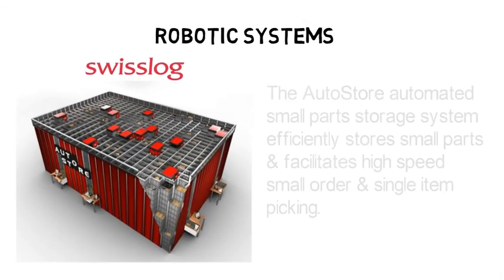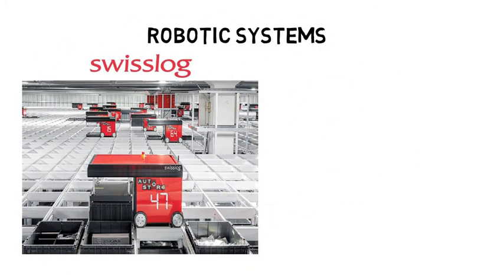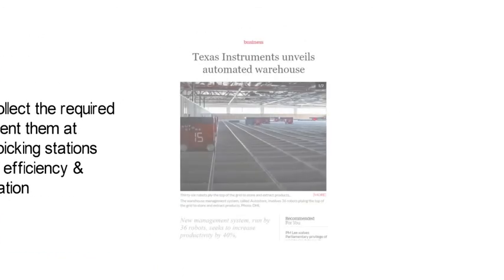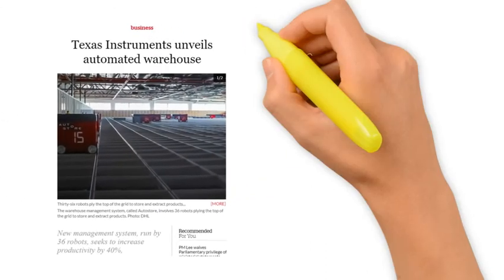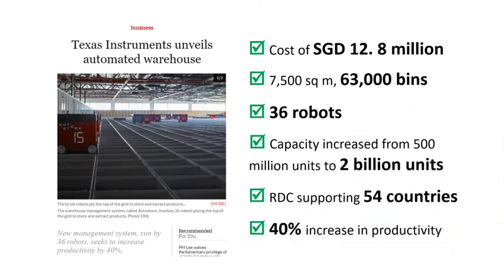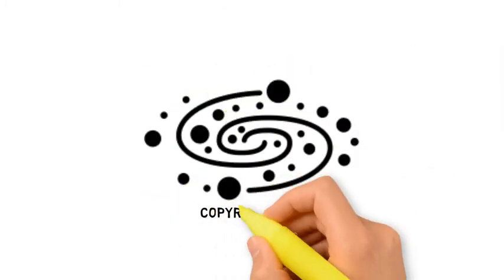The AutoStore is a fully automated storage system designed to efficiently store small parts and facilitate high-speed small-order and single-item picking. Robots collect the required bins and present them at integrated picking stations, increasing efficiency and maximizing space utilization. In 2013, Texas Instruments became the first company to set up AutoStore in Asia, specifically in Singapore. This automated warehouse project comprised 63,000 bins and 36 robots. It was built at a cost of $12.8 million and saw their capacity increase from 500 million units to 2 billion units, enabling them to better support 54 countries globally while still achieving a 40% increase in productivity. With that, we have reached the end of Lecture 14. See you next time!